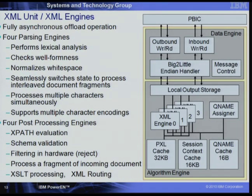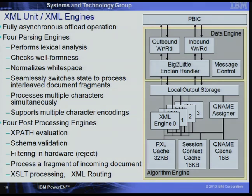The XML engine has a PBIC interfacing to the power bus and a data engine managing coprocessor requests and data movement. There are four XML engines, each with a parsing engine used to check that the XML document is well-formed, has the right syntax, removes white space, and creates an internal data structure stored in caches. The post-processing engine performs the more interesting work: XPath evaluation, schema validation, and XSLT processing.